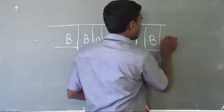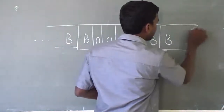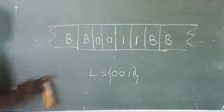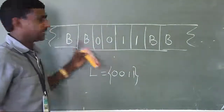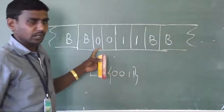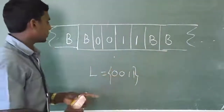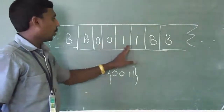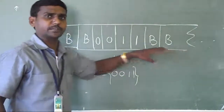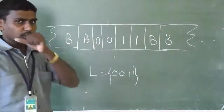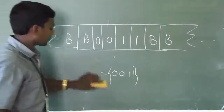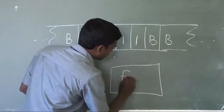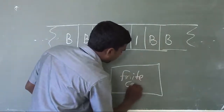Infinite blank symbols are present at the left side and right side of the input inside the tape. So for input zero zero one one, we have infinite blank symbols on the left side and infinite blank symbols on the right side. The machine also consists of a finite control.